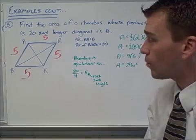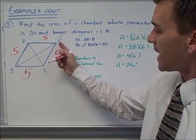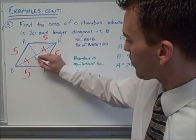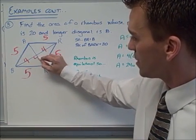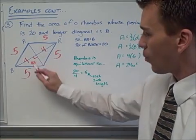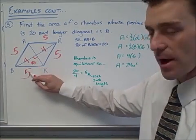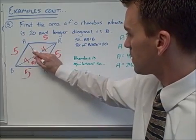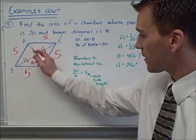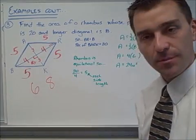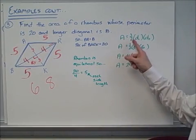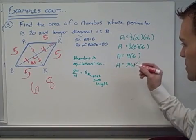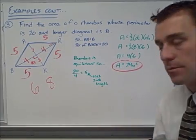We know the longer diagonal is 8 and it's bisected, so each half is 4. The diagonals are perpendicular, giving a right triangle with a leg of 4 and hypotenuse of 5 — that's a 3-4-5 triple, so the other leg is 3, making the shorter diagonal 6. Plugging into the formula: one half times 8 times 6 — one half times 8 gives 4; 4 times 6 gives 24 units squared.